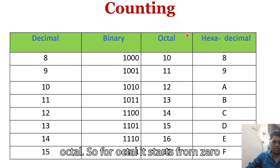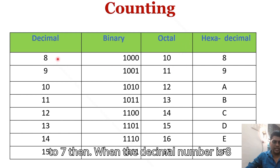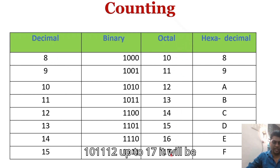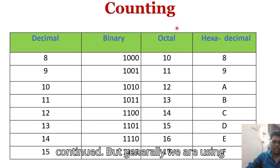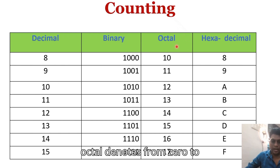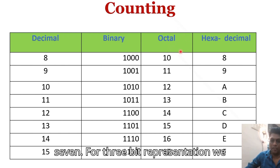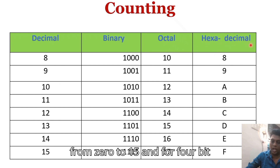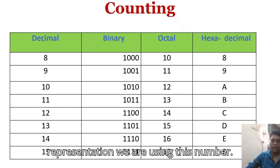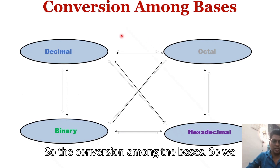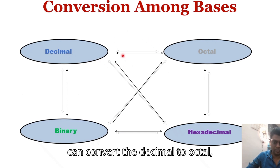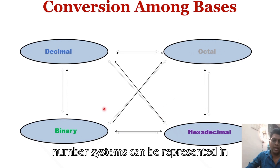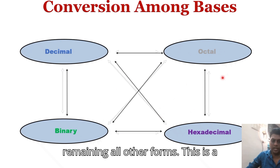For octal, it starts from 0 to 7. When the decimal number is 8, the octal representation is 10, continuing as 11, 12, up to 17. We generally use octal with 3-bit representation (0 to 7) and hexadecimal with 4-bit representation (0 to 15). These are the conversions among all the bases.